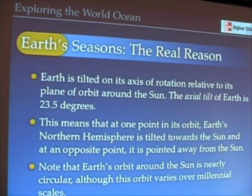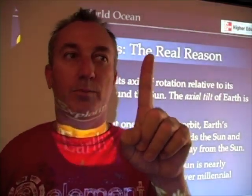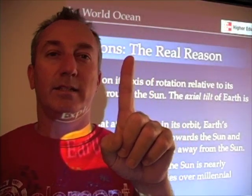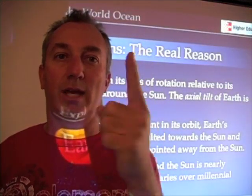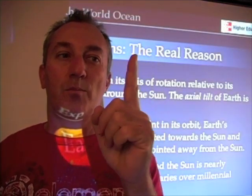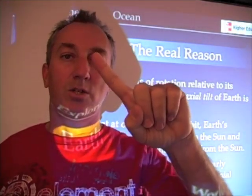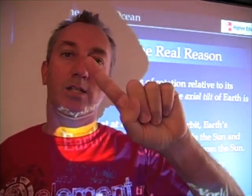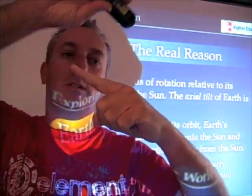Let's look at the real reason for Earth's seasons. Earth, as a planet, rotates on its axis — we all know that. But as it turns out, it's tilted 23 and a half degrees, so that it actually rotates on its axis at a tilt.